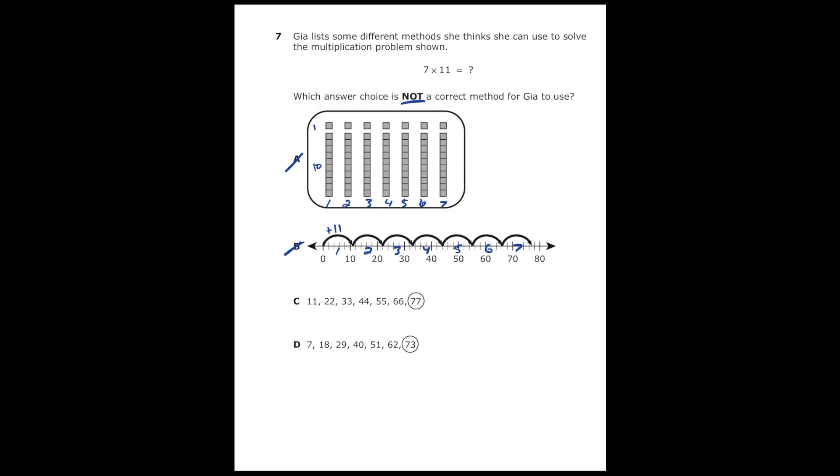Letter C, we're starting at 11, and we're adding 11 each time, and if we count up the amount of numbers we have, we have seven numbers, and seven times 11 is 77, which they have circled. So that one would be correct, but again, we need one that's not correct.